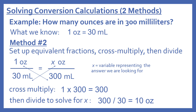Something to remember with method one: the unit you're looking for must be on top after cancellation. Now method two — same problem: how many ounces are in 300 milliliters? We set up equivalent fractions and cross-multiply, then divide. One ounce over 30 milliliters equals x ounces over 300 milliliters. Cross-multiplying: 1 times 300 gives us 300, then divide by 30 — so 300 divided by 30 equals 10 ounces.